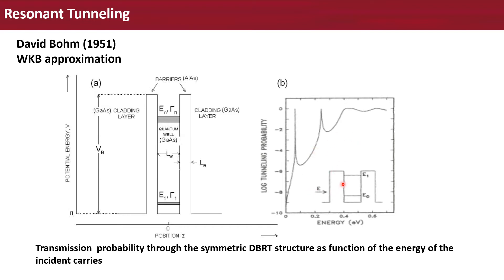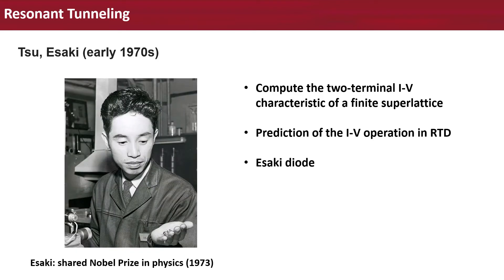The resonant tunneling diode can also be made of different materials and different structures. After the concept of resonant tunneling was put forward, it was not until the early 1970s that Tsu and Esaki computed the two-terminal current-voltage characteristic of a finite superlattice and predicted that resonances could be observed not only in the transmission coefficient, but also in the current-voltage characteristic. Esaki shared the Nobel Prize in Physics in 1973, and the resonant tunneling diode is also named after Esaki as the Esaki diode.